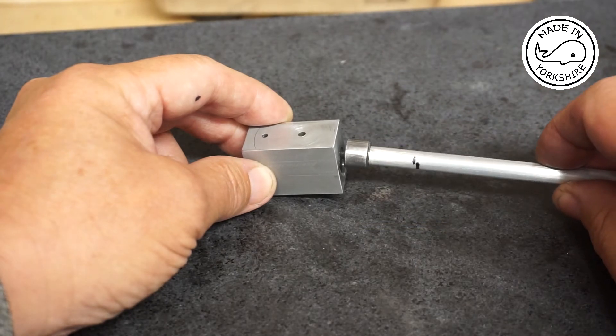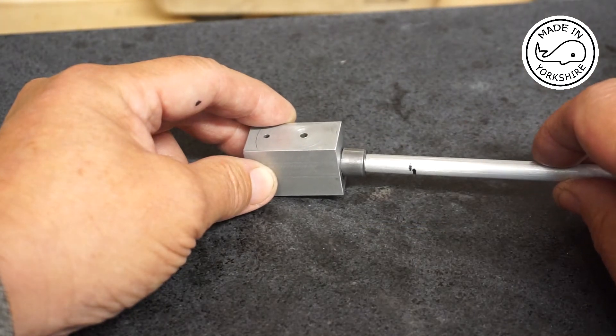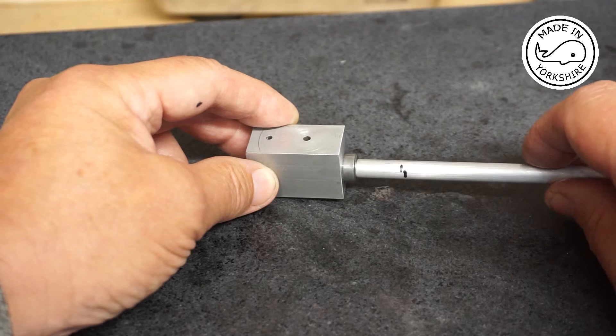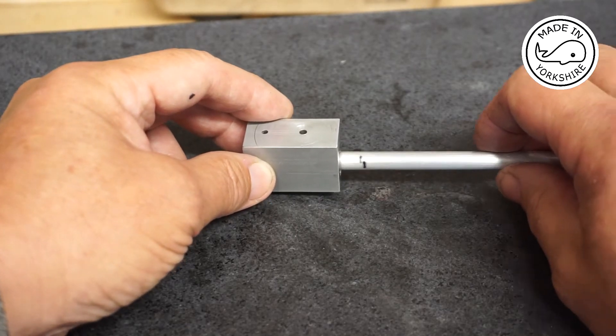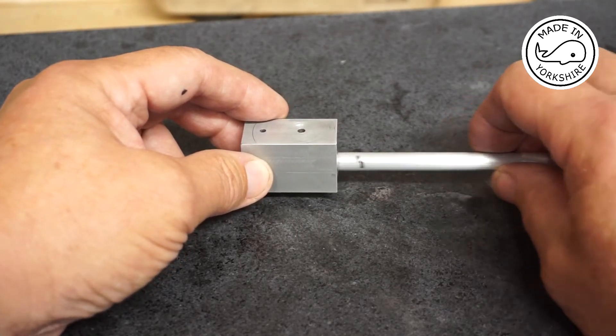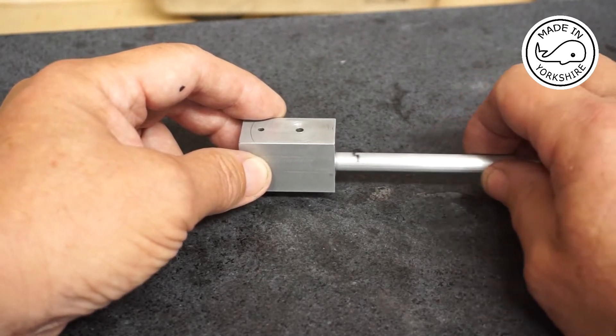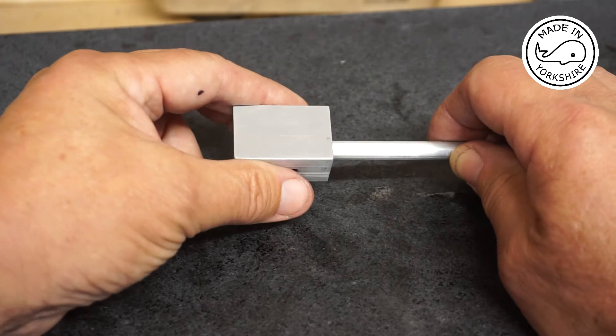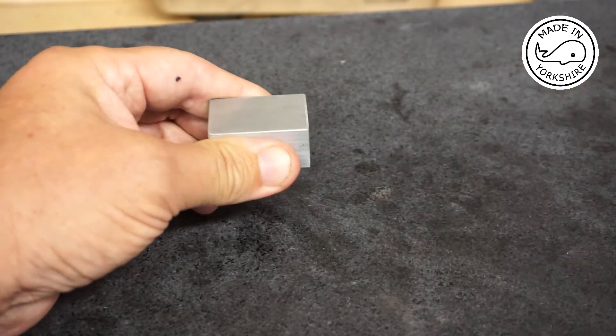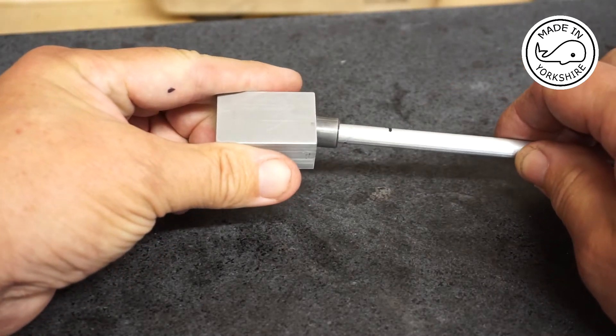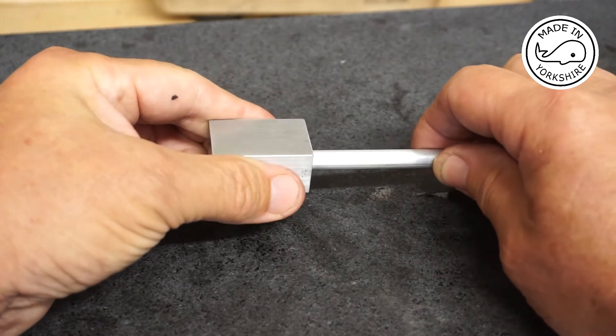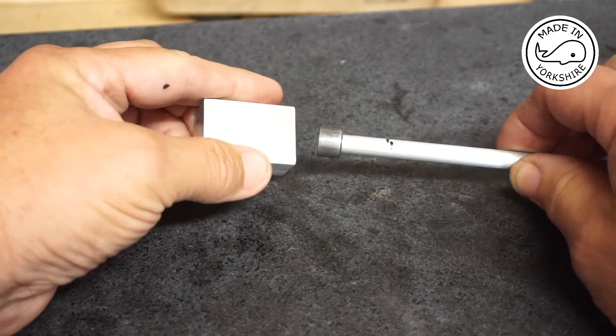I decided just to Loctite this piston onto a bit of round bar and just to check that it moves okay and it does, that feels okay. If I cover all the holes up we get a nice pop. So hopefully that'll be good enough.